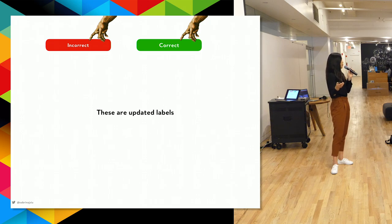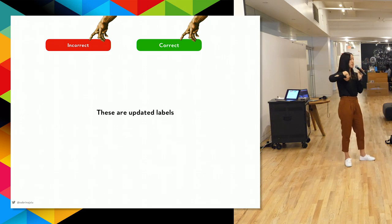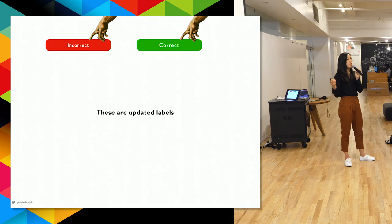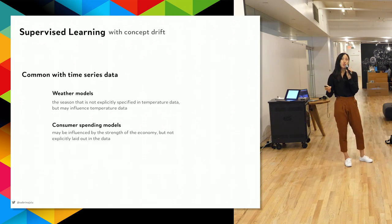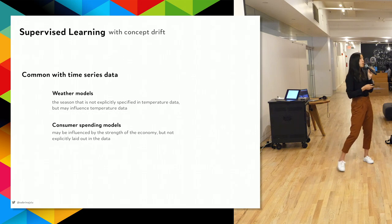Every time I came in and told the model 'incorrect' or 'correct,' those are updated labels — so the model now knows what is a tomato and what probably is not. More specifically, this is called supervised learning with concept drift.